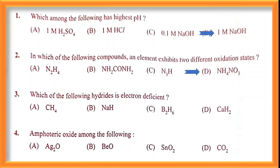Question number three: which of the following hydrides is electron deficient? Electron deficient means a lack of electrons. You already know it is the boron family — the boron family has a deficiency of electrons and has free vacant orbitals. So option C is the correct answer.